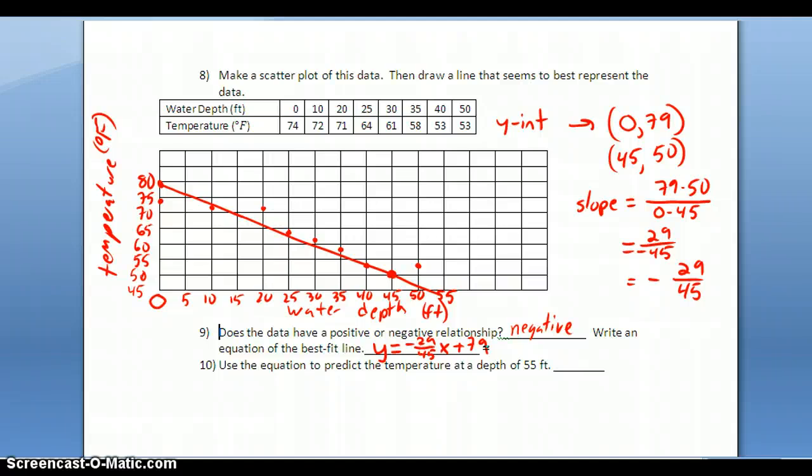How can I use this equation? The x is the water depth and y is the temperature. To predict the temperature at a depth of 55 feet, I substitute 55 for x: y = -29/45(55) + 79. This will give me the temperature value.